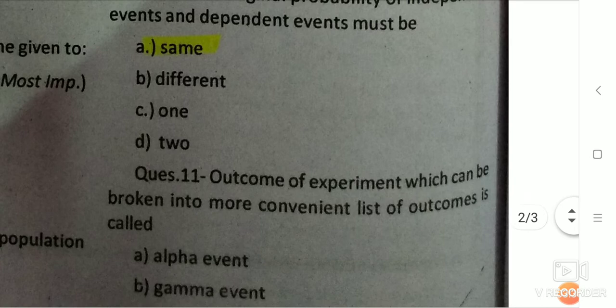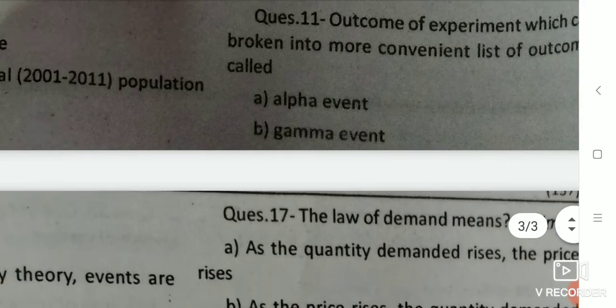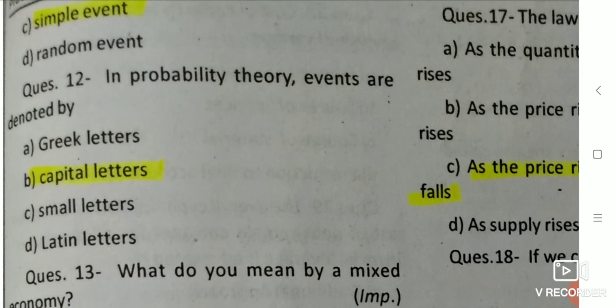Q10: Outcome of an experiment which can be broken into a more convenient list of outcomes is called — it is called a simple event. Q11: In probability theory, events are denoted by — the answer is capital letters.